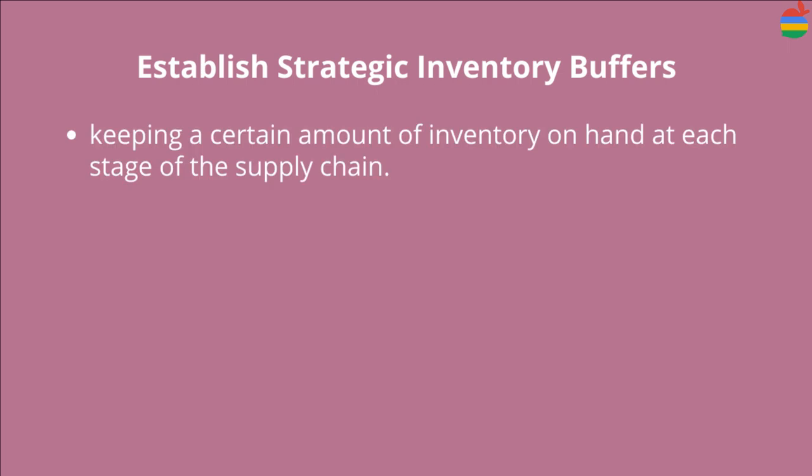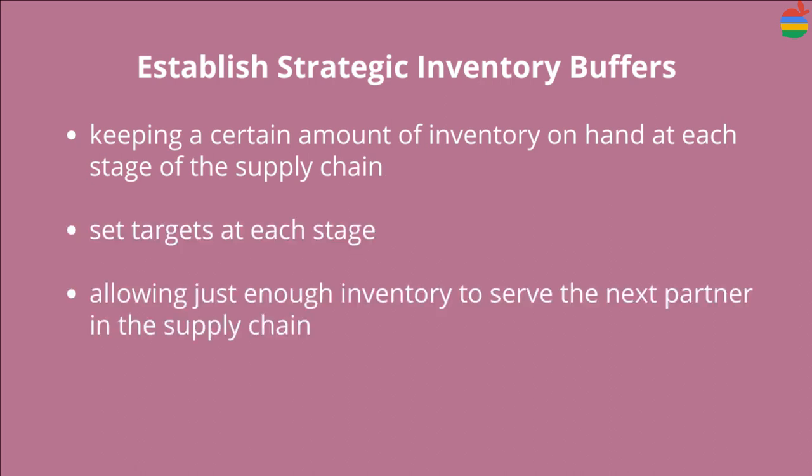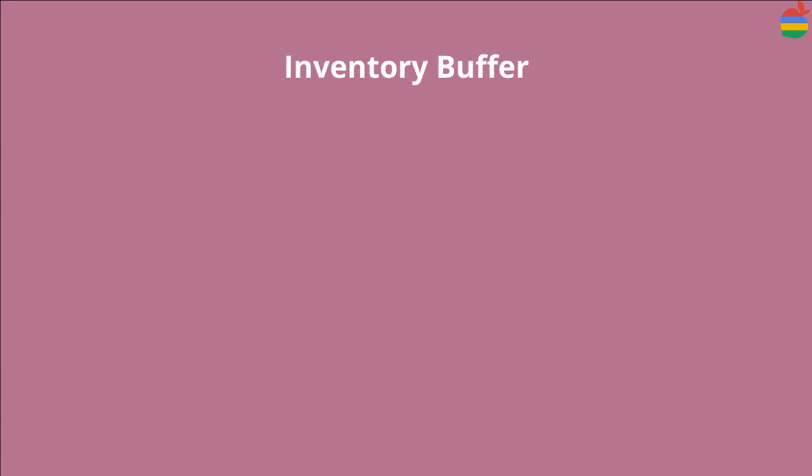You accomplish this by establishing a strategic inventory buffer — by keeping a certain amount of inventory on hand at each stage of the supply chain. You set targets at each stage, allowing just enough inventory to serve the next partner in the supply chain.